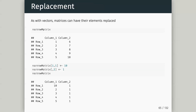Just as with vectors, matrix elements can be replaced in exactly the same way except we need to be more explicit because we've got two dimensions. I can replace the first column first row with ten. I could also replace a whole row or column — here I replace the whole of column two with one.